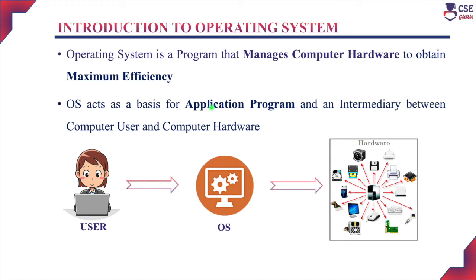If a user wants to run any specific application, the operating system should provide an interface to run that application. For example, if a user wants to run specific applications like a word processor, web browser, or spreadsheet, the operating system will provide an interface to run that application and satisfy the specific user needs. The operating system acts as an intermediary between the user by providing an interface to run specific applications and also manages and coordinates all the computer hardware devices connected to that particular system.